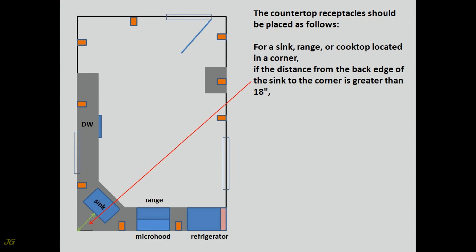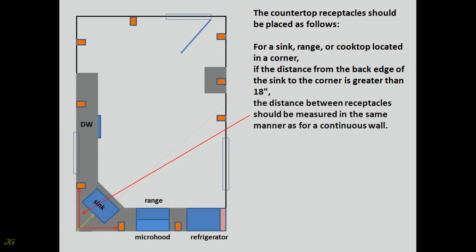For a sink, range, or cooktop located in a corner: if the distance from the back edge of the sink to the corner is greater than 18 inches, the distance between receptacles should be measured in the same manner as for a continuous wall.